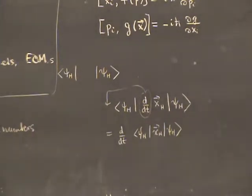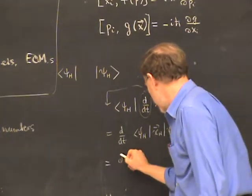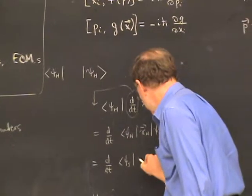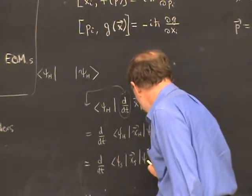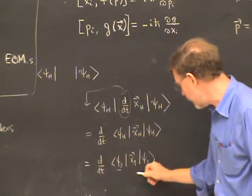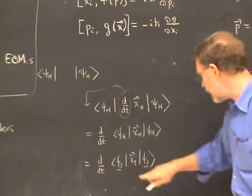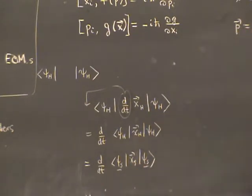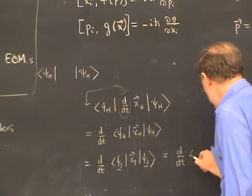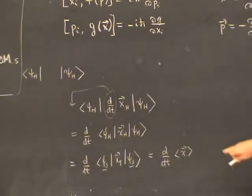Expectation values are the same in both the Schrödinger and Heisenberg pictures. So this is the same as d/dt of the expectation value of x in the Schrödinger picture, where the time dependence is carried by the kets and bras, and x_S is now time-independent. We just abbreviate this as d/dt of the expectation value of x — we're not being specific which picture it is because it doesn't matter.